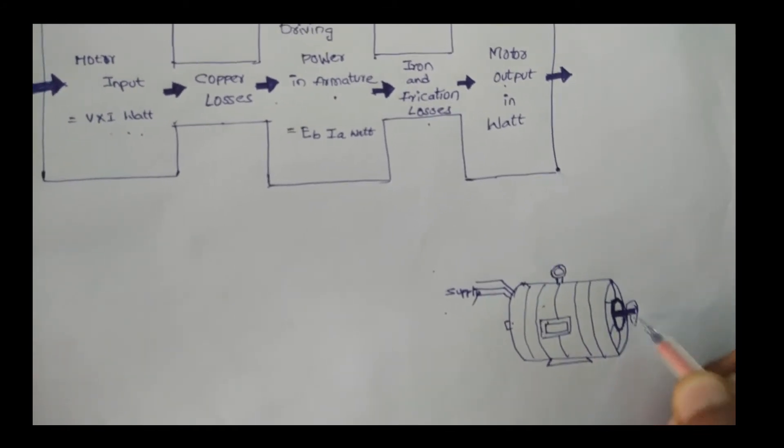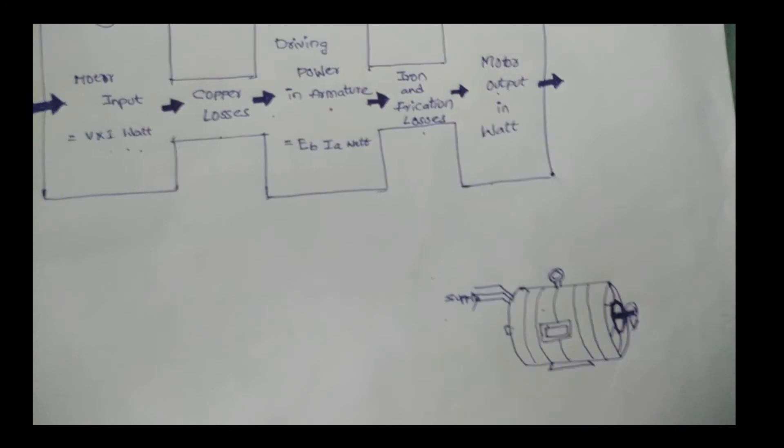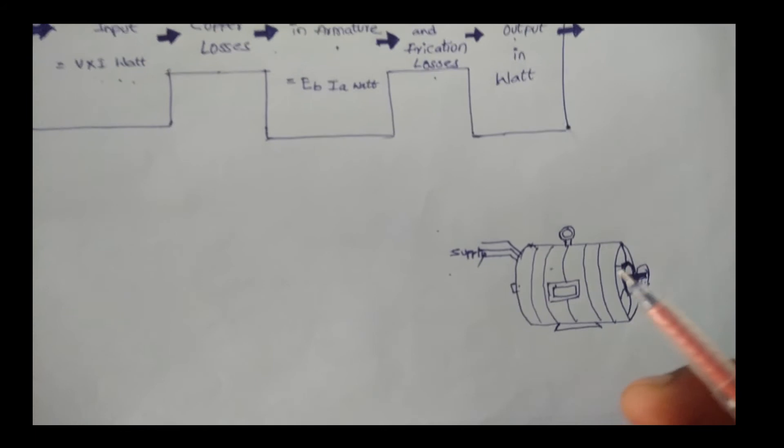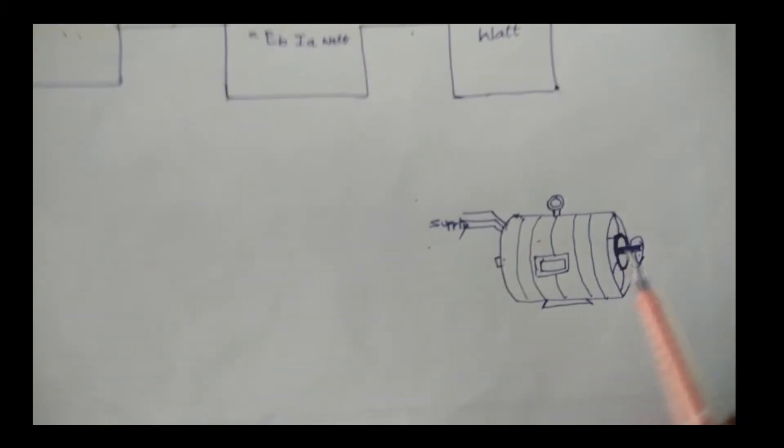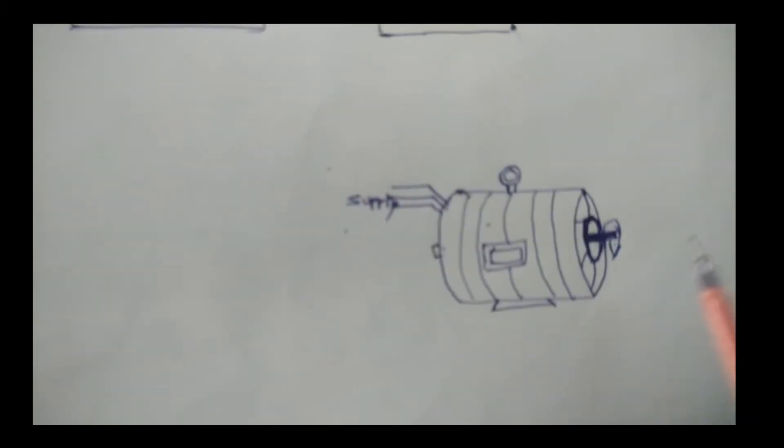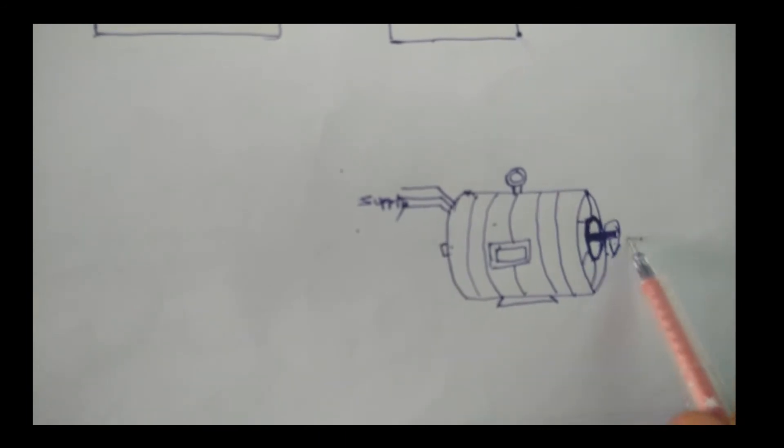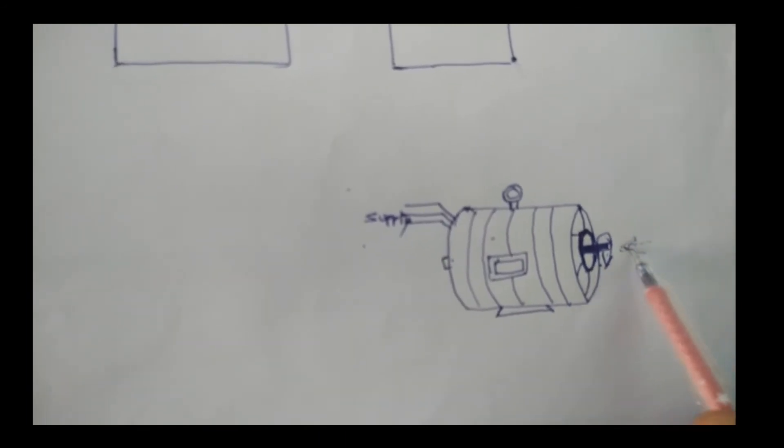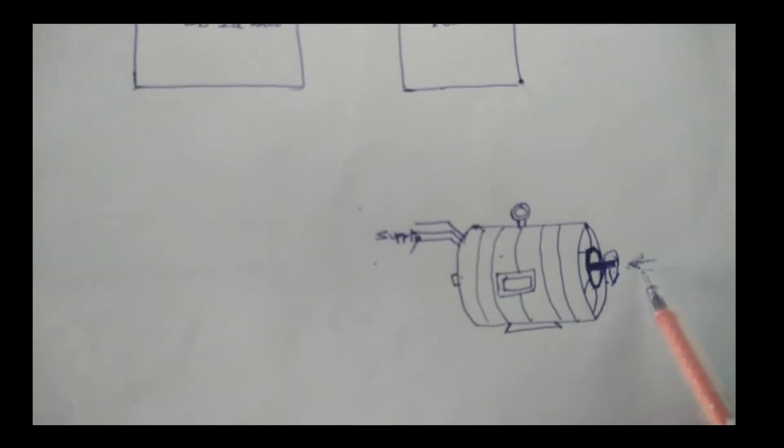See this diagram clearly. We can give the mechanical input to the same machine, and it will produce electrical power output. When we give the mechanical input to it, it acts as a generator.